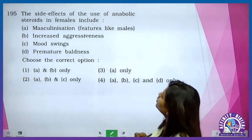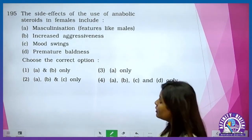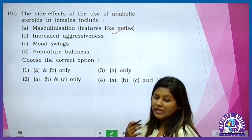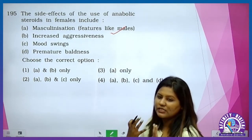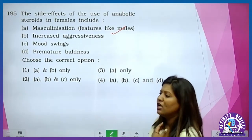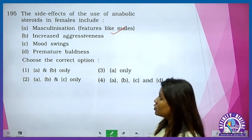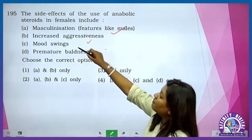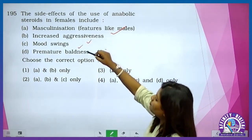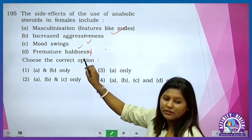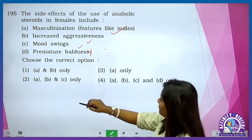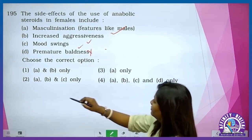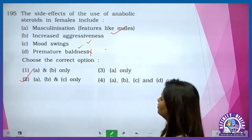The side effects of the use of anabolic steroids in females includes masculinization — male characteristics jaisi beards, voice deepening, mood swings, increased aggressiveness. But not premature baldness — it is not given in NCERT. So it is A, B and C — this is option 2.